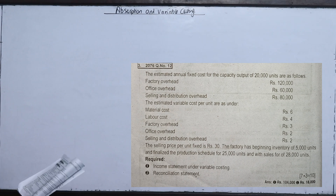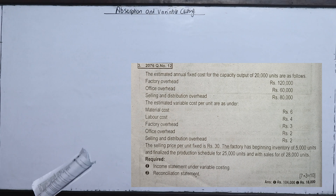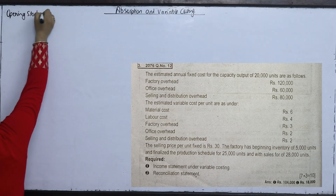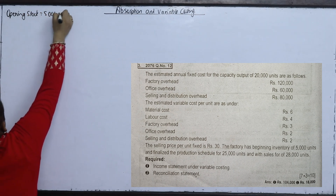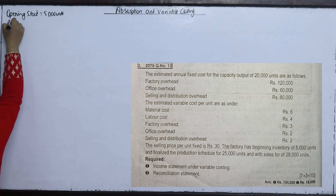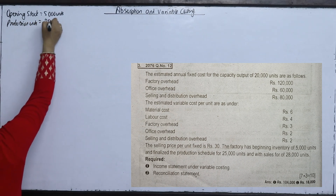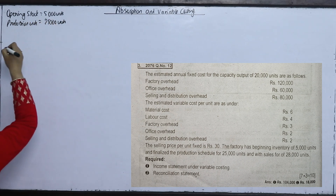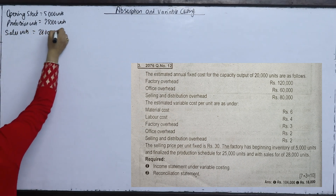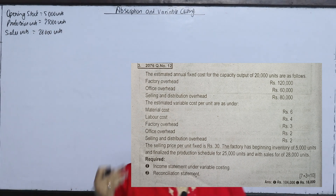The factory has a beginning inventory. The opening stock is 5,000 units. The production schedule shows production units of 25,000 units and sales units of 28,000 units. In this problem, opening stock, closing stock, production, and sales values are all provided.